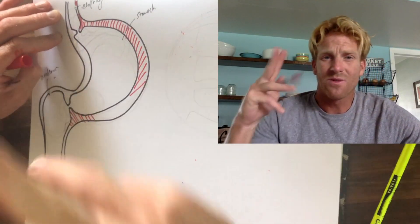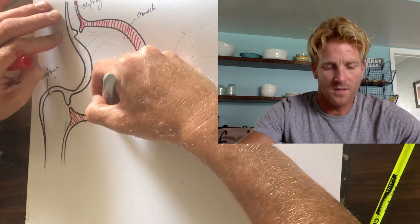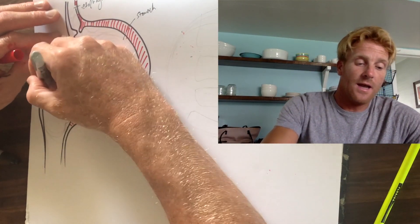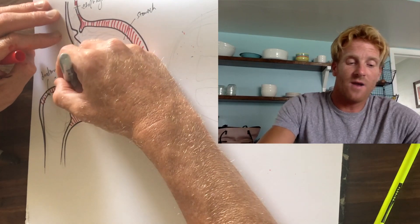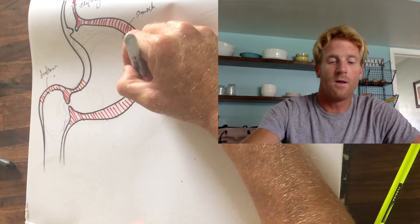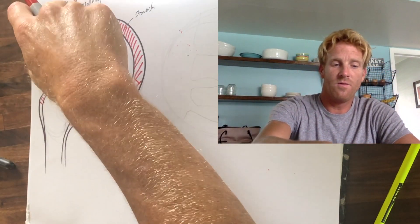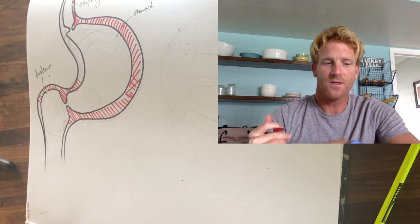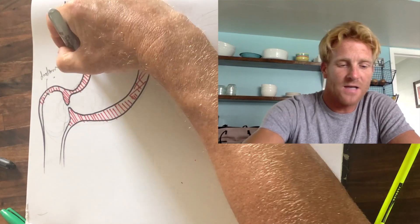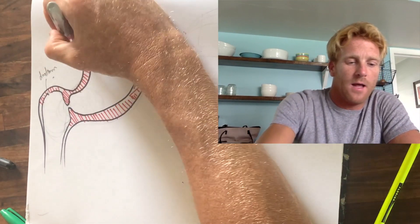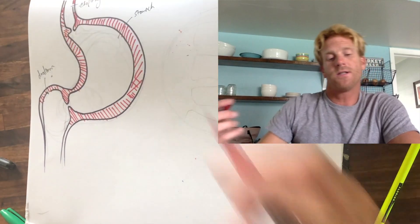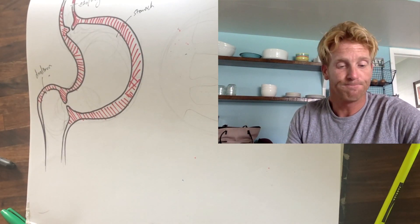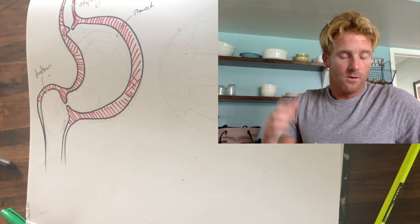The smooth muscle of the stomach comes in three different orientations: circular muscle fibers, longitudinal muscle fibers, and oblique muscle fibers. These three orientations allow the stomach to do many things — contract and propel food down through peristalsis toward the duodenum, grind and mix food with gastric juices, and squeeze food to help break it apart.